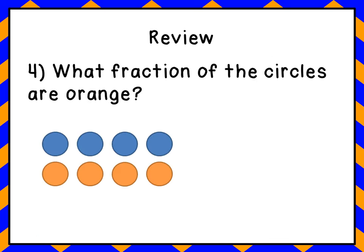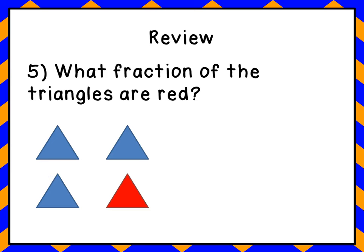Question four: what fraction of the circles are orange? Remember the steps — count the number of pieces you have all together first, then count just the orange circles. Write down your fraction, and you should have written down four-eighths. We have eight circles and four of them are orange, so four-eighths is the answer. Question five: what fraction of the triangles are red? Follow your steps — count how many triangles you have first; that's your denominator. Then count just the red triangles; that's your numerator, the number that goes on top. If you did that correctly, you should come up with the fraction one-fourth. Nice job.